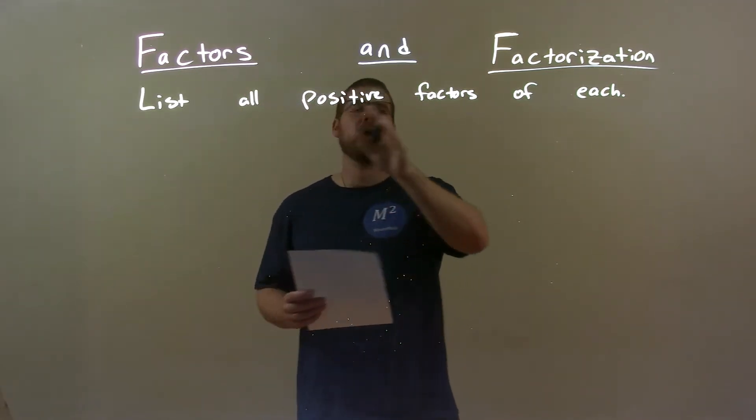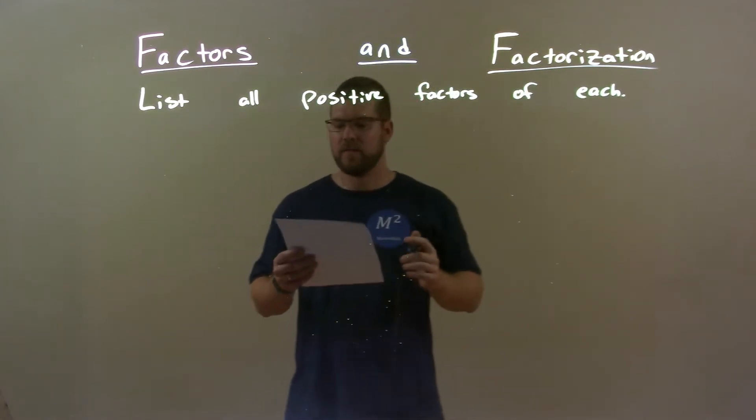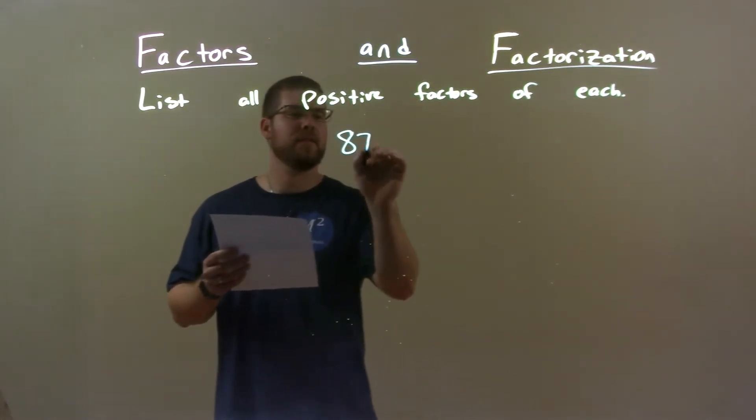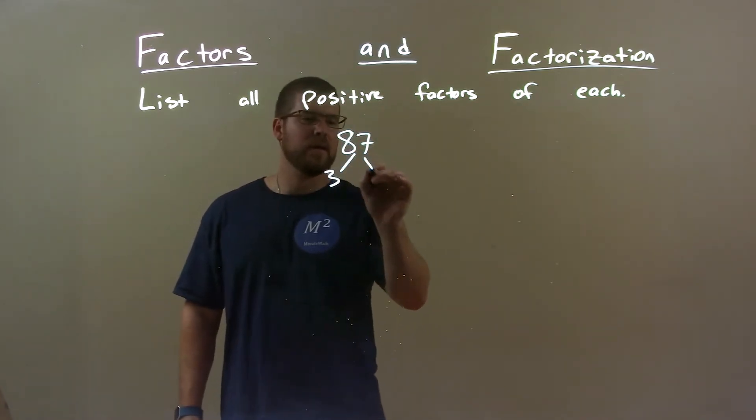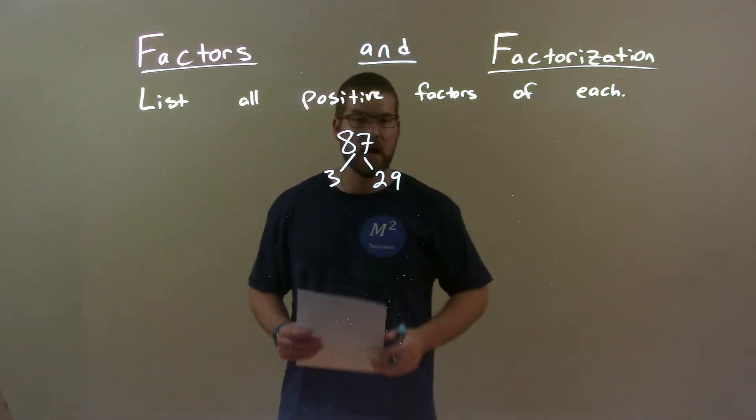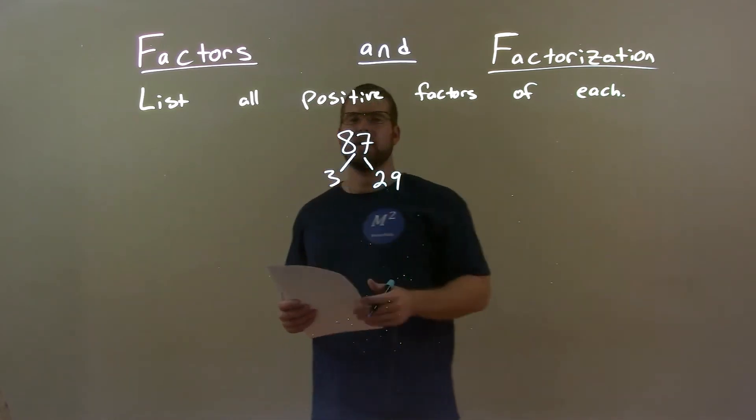We're going to list all positive factors of each. So if I was given this number, 87. Well, 87 I know is divisible by 3, and that's 29 times, right? 3 times 29 is 87.